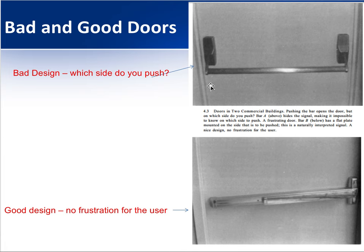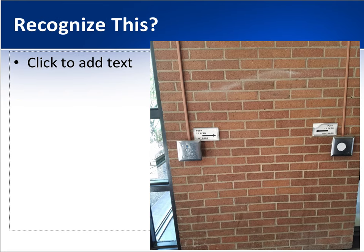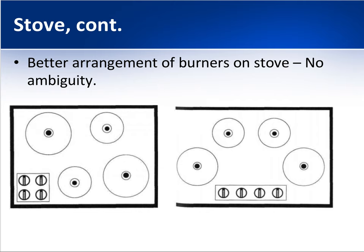We can have bad doors where you don't know which side to push — the good design makes it obvious, but the bad design leaves you guessing. I posted a link to a funny video about bad doors for you to watch. I actually took a photo from NEIU that I thought was really backwards and funny. Stoves are another example — I had a horrible stove as a kid where the labels were rubbed off and there was no way to know which burner controlled which knob.